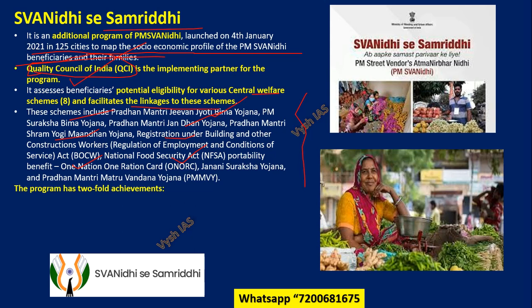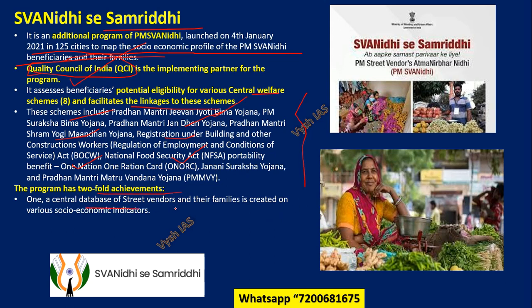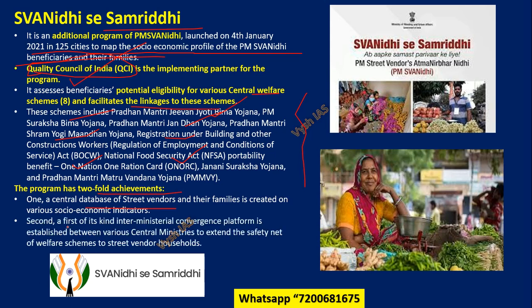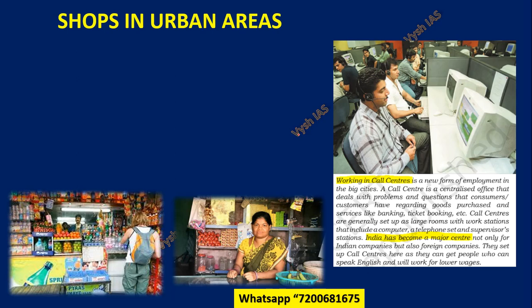Through SVANidhi se Samridhi, unorganized sector workers get linked to schemes like Jeevan Jyoti Bima, Suraksha Bima, Jan Dhan Yojana, Pradhan Mantri Shram Yogi Maan-dhan Yojana, and others — benefits they usually cannot access. This way, the loan they receive can be used purely for business. The twofold achievement is: first, a central database of all family members is created; second, a first-of-its-kind inter-ministerial convergence platform is established between various central ministries to extend the safety net of welfare schemes to street vendor households.